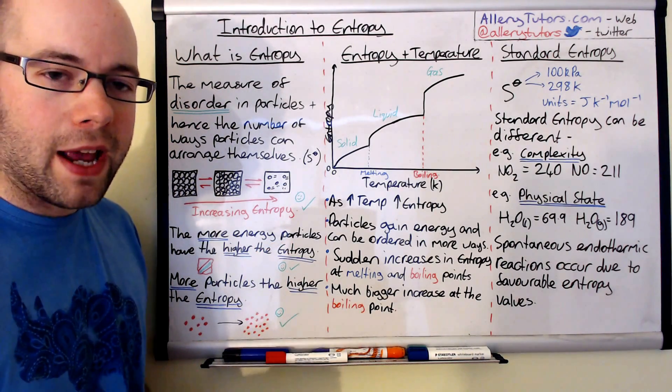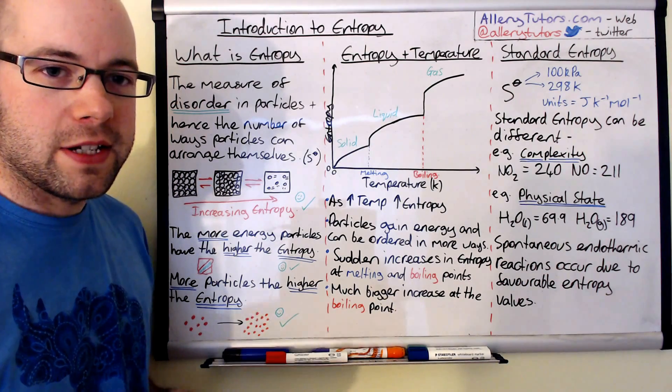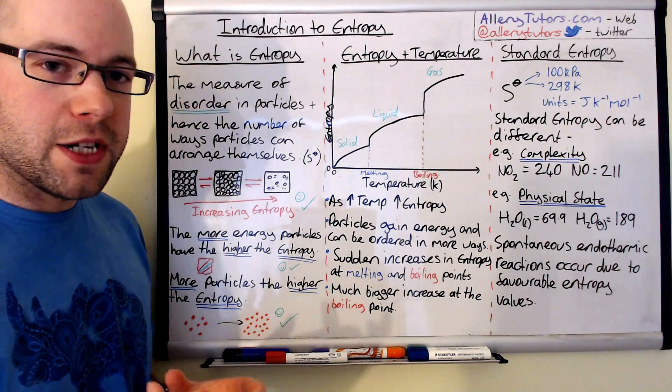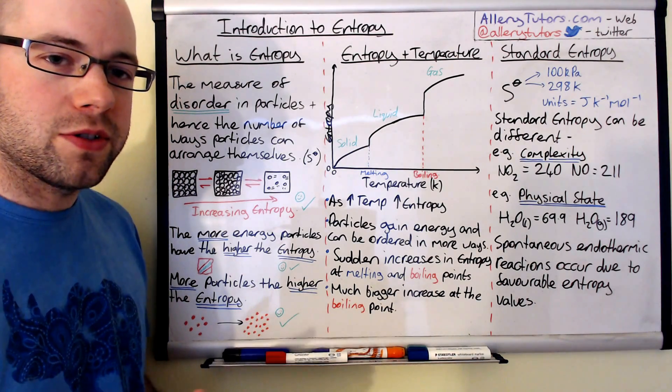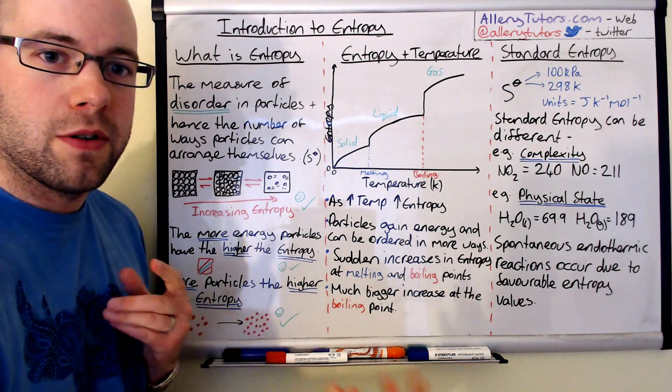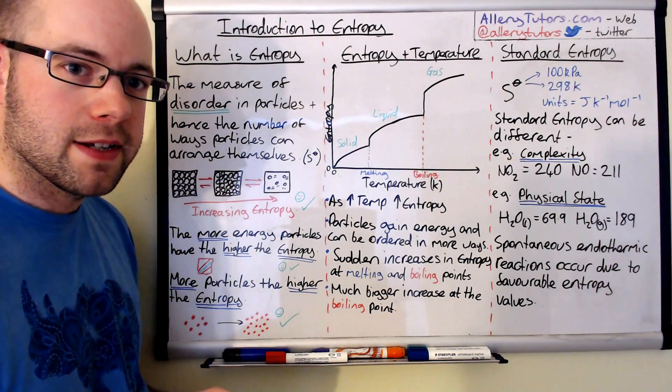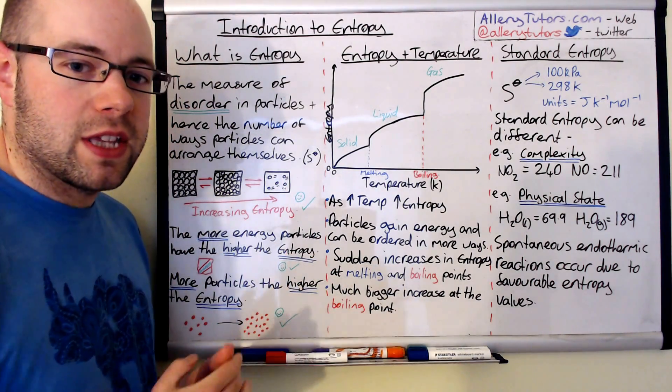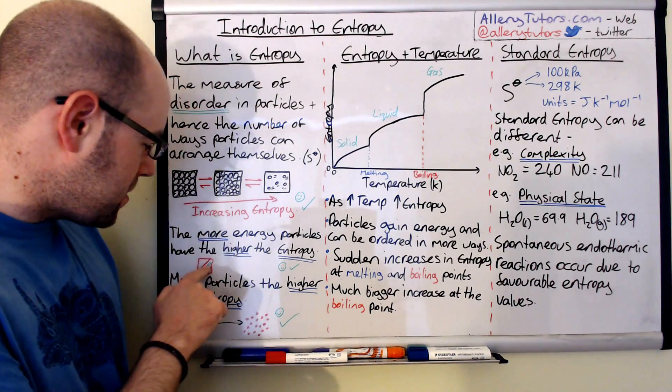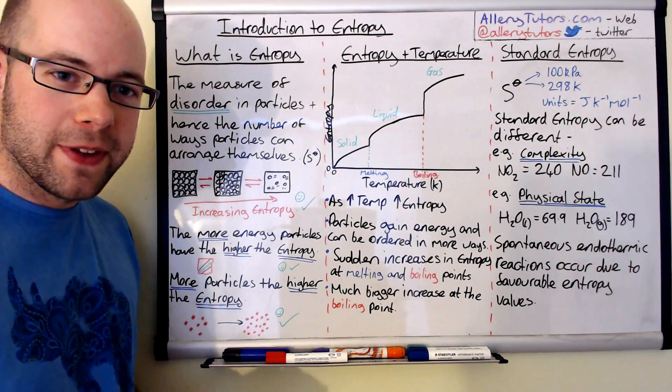Another way to affect entropy is energy. Particles have energy, we call it quanta. These are little packets of energy that each particle has. The more energy they have, the more ways in which these particles can arrange themselves because they're going to move towards the gaseous phase. So particles with more energy will increase the entropy value.